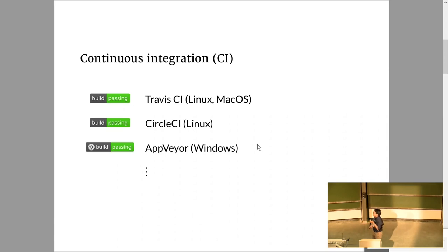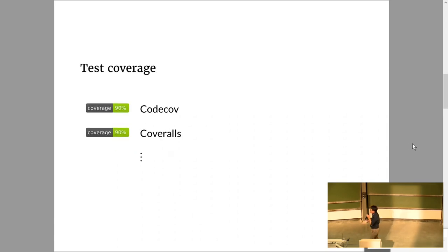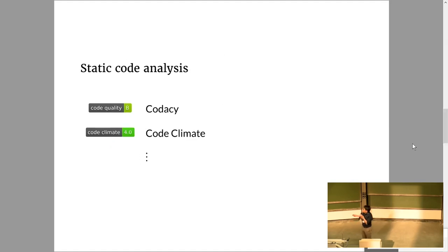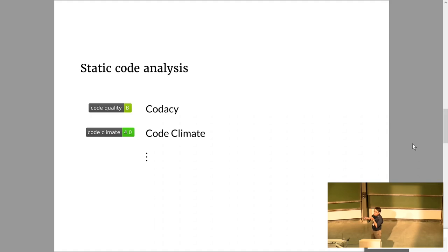Then we're talking about test coverage — how many lines of code are covered by your unit tests? There are two sites you can use: Codecov or Coveralls. The next one is static code analysis, which basically runs PyLint, PyFlakes, and so on in your codebase, and they present the errors and potential flaws in your code in a very nice interface. You get a nice badge with a grade.